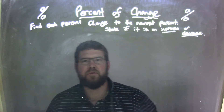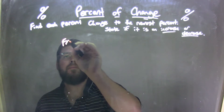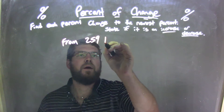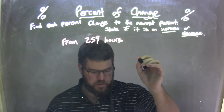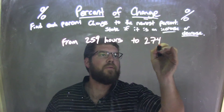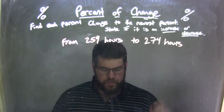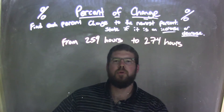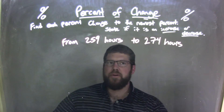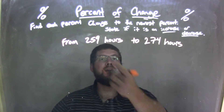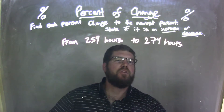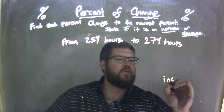So if we're given this problem: from 259 hours to 274 hours. What you need to know is whether it's an increase or a decrease first. That is actually an increase — 259 goes up to 274, so that's an increase here.